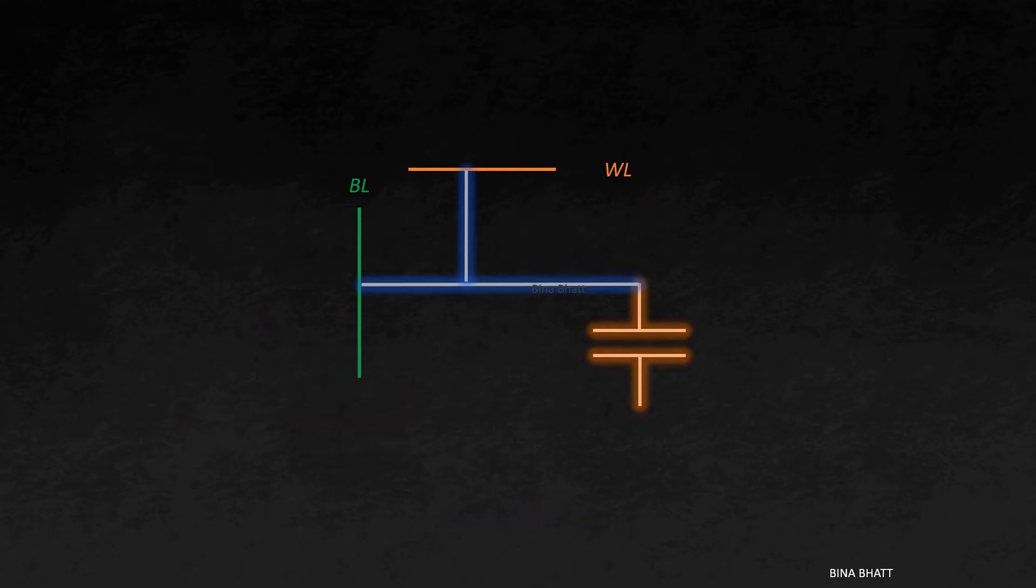Now, in case of bit value of 0, the charge will flow from the bit line towards the capacitor, causing a slight decrease in the bit line voltage. And this slight decrease in voltage is then detected and amplified by the differential sense amplifier. Slight decrease in voltage gets translated to a bit value of 0. That was the basic explanation.